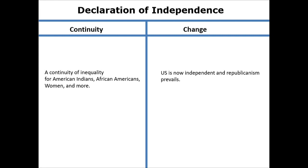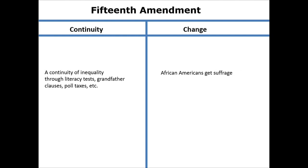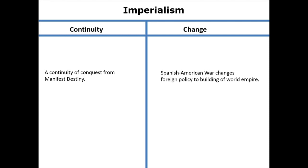Regarding continuity and change — some things stay the same, some change, some give you both. The Declaration of Independence is a change — new government, enlightenment thought — but there's still a continuity of inequality for women and minorities. The 14th Amendment gives citizenship — change — but there's still a continuity of denied rights through Home Rule and Jim Crow. The 15th Amendment gives African Americans suffrage, but inequality continues through literacy tests, grandfather clauses, and poll taxes. Imperialism is a change after the Spanish-American War, but there's continuity from earlier Manifest Destiny during the Mexican-American War.